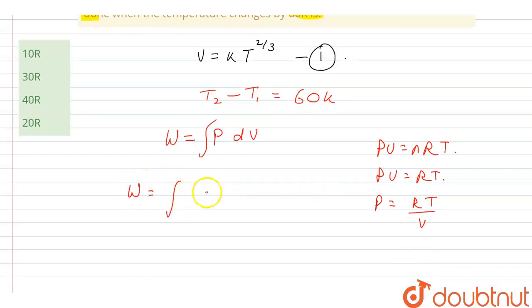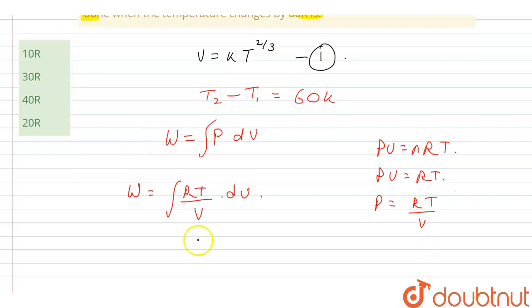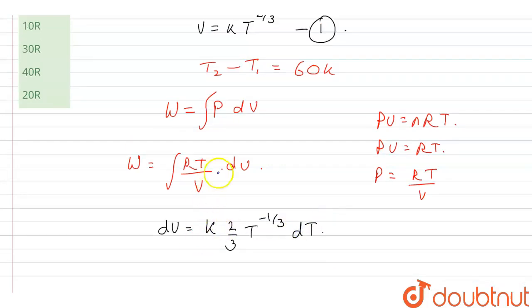To calculate dV, I can differentiate this equation. From equation 1, dV = k (2/3) T^(2/3 - 1) dT, which is k (2/3) T^(-1/3) dT. Now if I put these values into this equation...